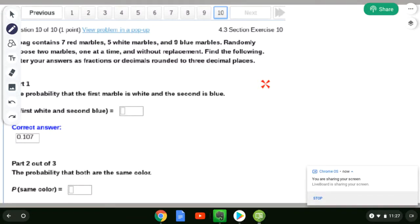I'm going to work part two of this problem. We've got a bag that has seven red marbles, five white, and nine blue. Altogether that gives me n, which would be 12 plus 9, which is 21.